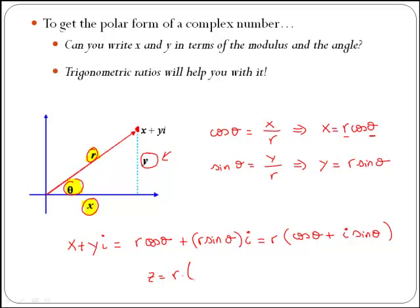z equals r by cos of theta plus i sin of theta is what is known as the polar form of a complex number.